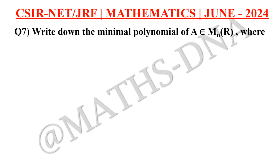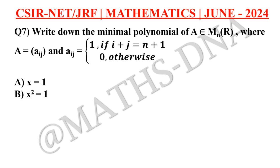Now, one question for your practice, the solution will be given in the next video. Question 7, write down the minimal polynomial of a matrix A belongs to M_n(R) of n cross n square matrices, where A equals a_ij, and a_ij is given to us as 1 if i plus j equals n plus 1, and 0 otherwise. The options for the minimal polynomial are: first, x equals 1, B, x squared equals 1, C, x cubed equals 1, and D, x squared equals minus 1. Comment your answer below in the comment box, and the solution will be provided in the next videos.